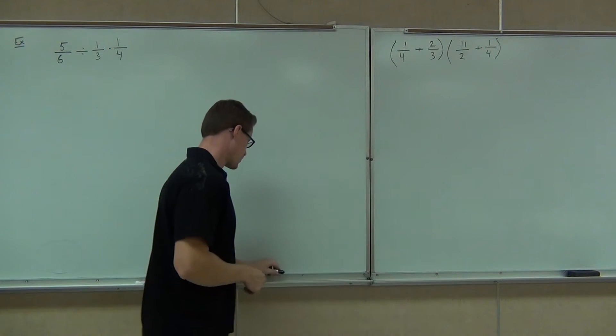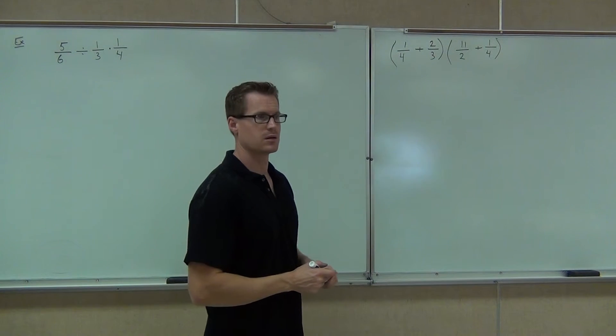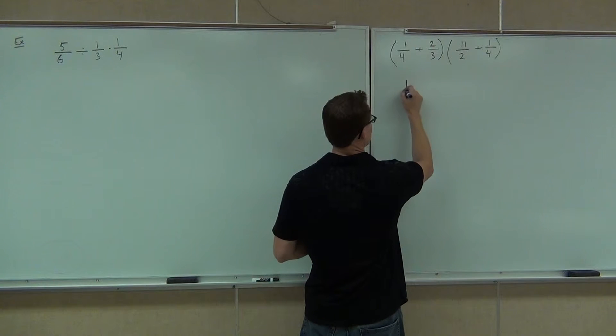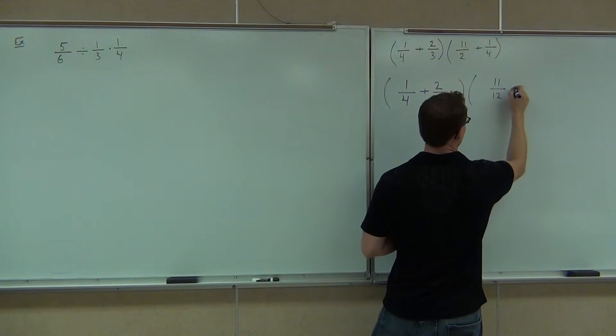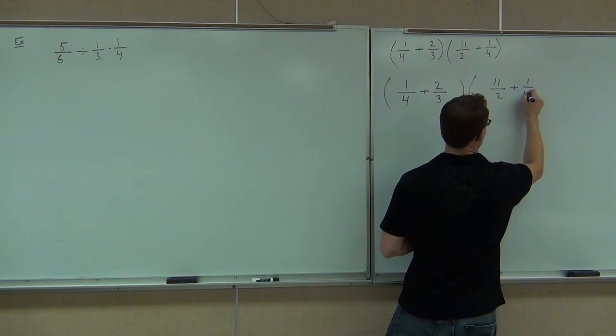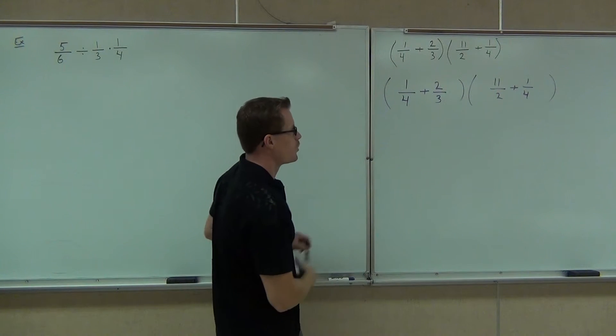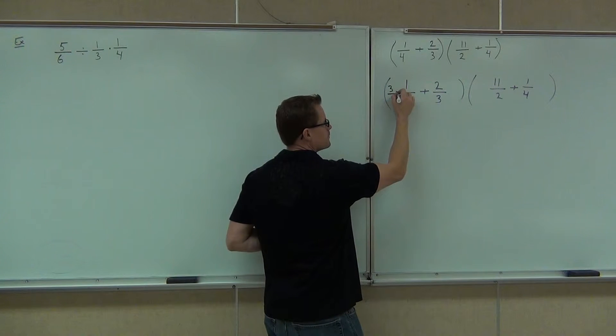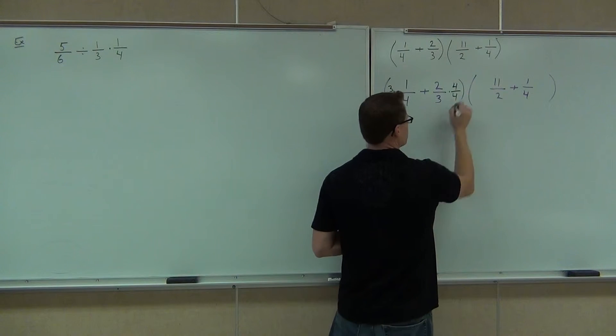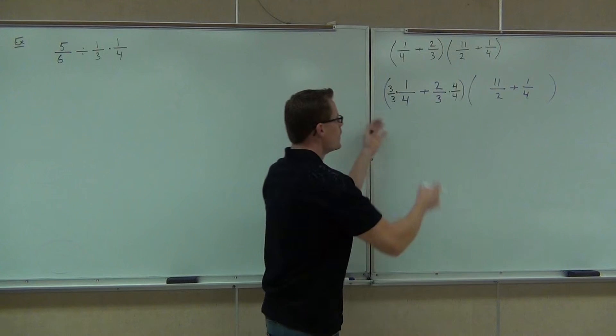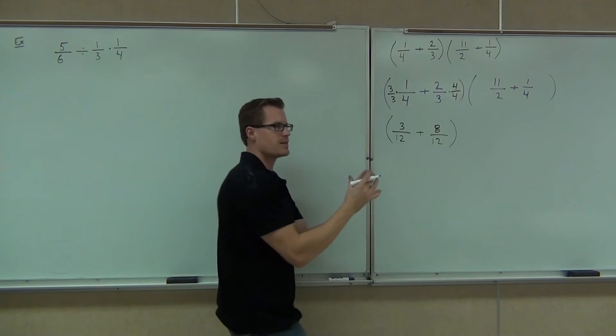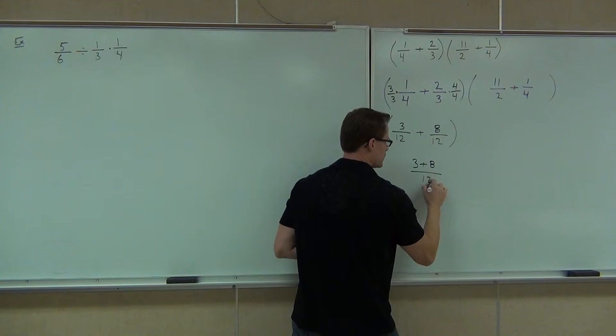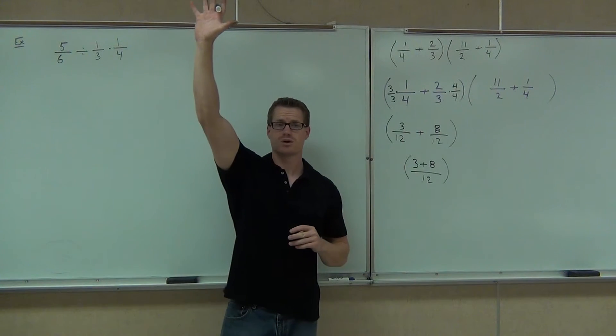In our first fraction, we've got 1/4 plus 2/3. LCD gives you what out of that? 12. Okay. So I'm going to rewrite it so we see what's going on. If our LCD is supposed to be 12 here, then we're going to have to multiply the 1/4 times 3 over 3, and we're going to have to multiply the 2/3 times 4 over 4. I'm going to work this fraction all the way down. On our left fractions, we've got 3/12, and of course, we're going to get 8/12. Did you make it that far, folks? Yes.